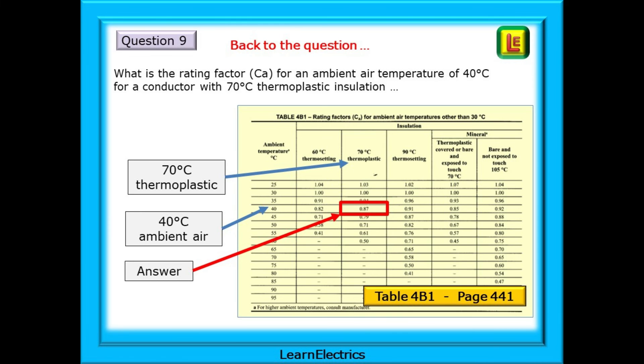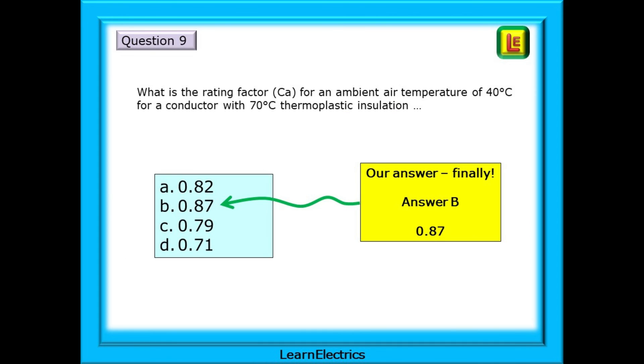Back to the question then. What is the rating factor CA for an ambient air temperature of 40 degrees Celsius for a conductor with 70 degrees Celsius thermoplastic insulation? and we now know that Table 4B1 is on page 441. Follow the clues in the question. 70 degree thermoplastic narrows the search to just one column. Find 40 degrees Celsius on the left to find the correct row. Where the column and row meet is the answer, a rating factor of 0.87. The answer, finally, is answer B 0.87. If you still haven't updated your book, do so now. You may need that information in the exam.